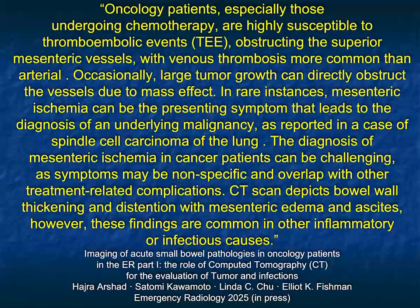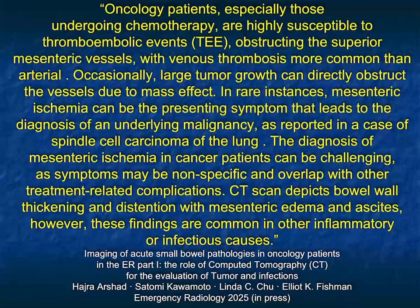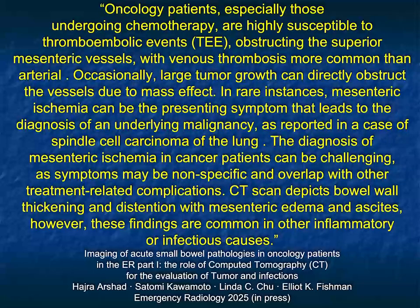Oncology patients undergoing chemotherapy are susceptible to thromboembolic events — not only in the pulmonary arteries and peripheral vessels, but also the SMA and SMV. Venous thrombosis is more common than arterial. Occasionally large tumors can obstruct vessels due to mass effect. In rare instances, mesenteric ischemia can be the presenting symptom that leads to the diagnosis of the patient's malignancy.